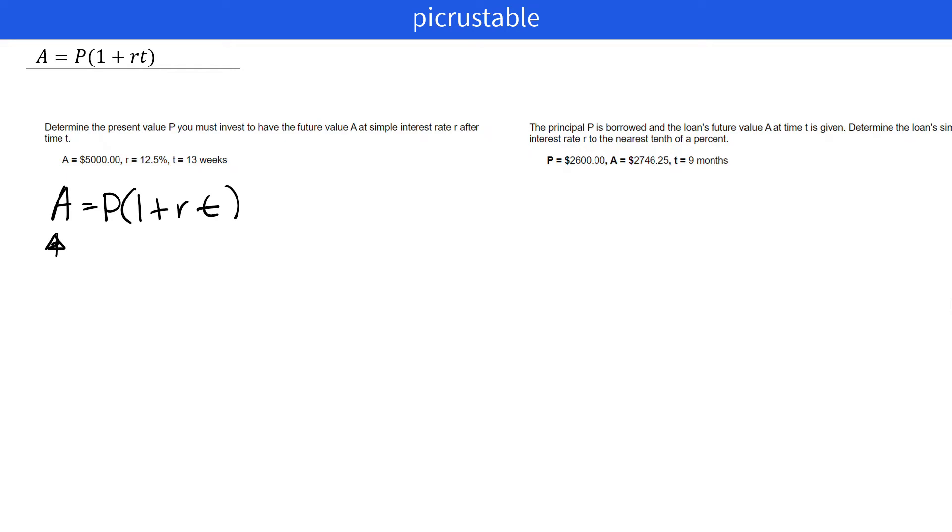A is the amount that you want in the end. P is the principal you have right now, or the money you have right now. R is your rate, and that's always a percent. And then we have time, which is based on a year.